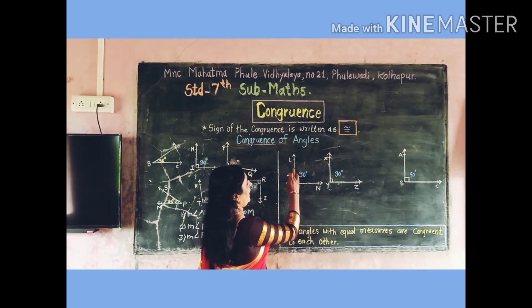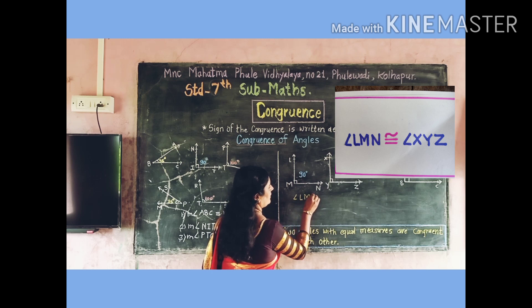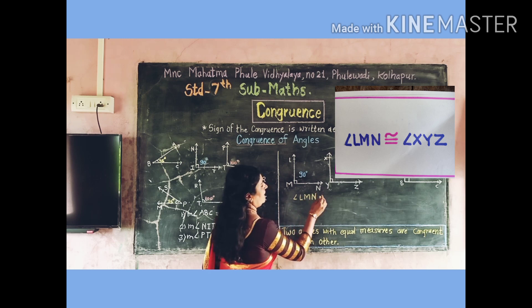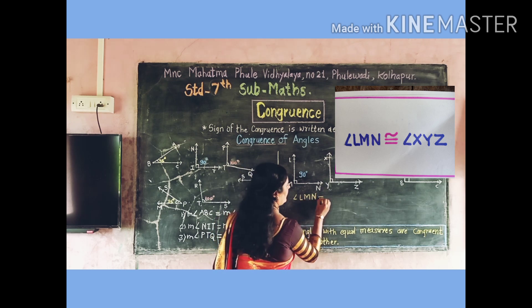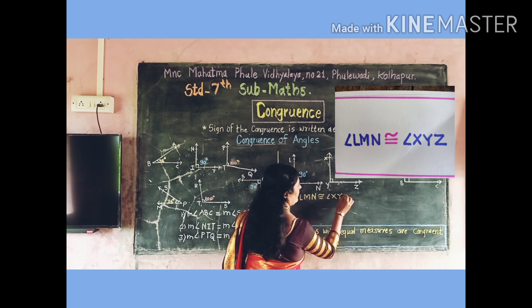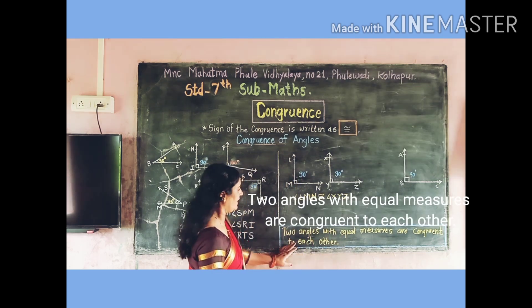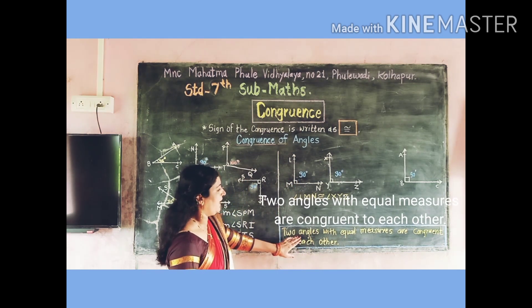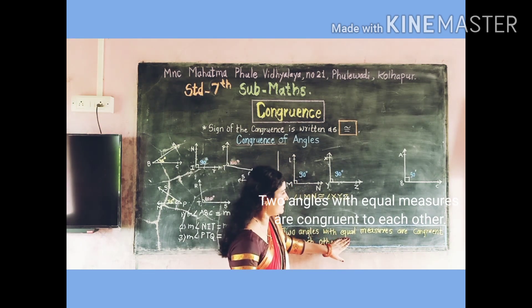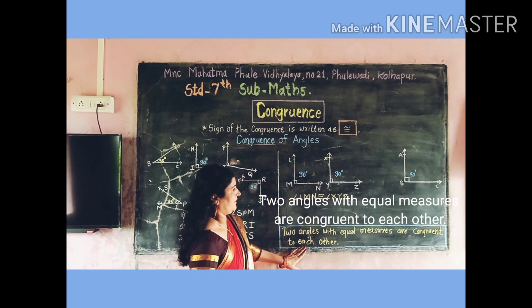So, angle LMY is congruent to angle XYZ. Here we say that two angles with equal measures are congruent to each other.